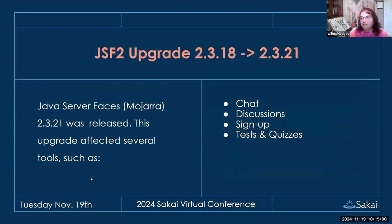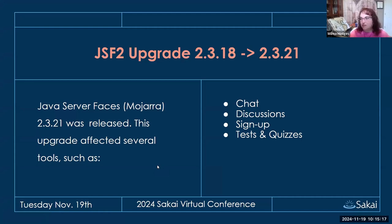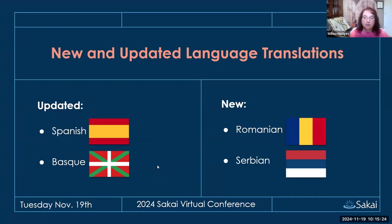There was a JSF upgrade which affected several tools like chat, discussion, sign-up, and tests and quizzes. This was behind-the-scenes work — very important but not necessarily super visible to the end user, still a major change in the upcoming release. We also have new and updated languages. We already had a Spanish translation but it was enhanced, along with the Basque translation. We now have a Romanian translation and a Serbian translation of Sakai, thanks to our international community.